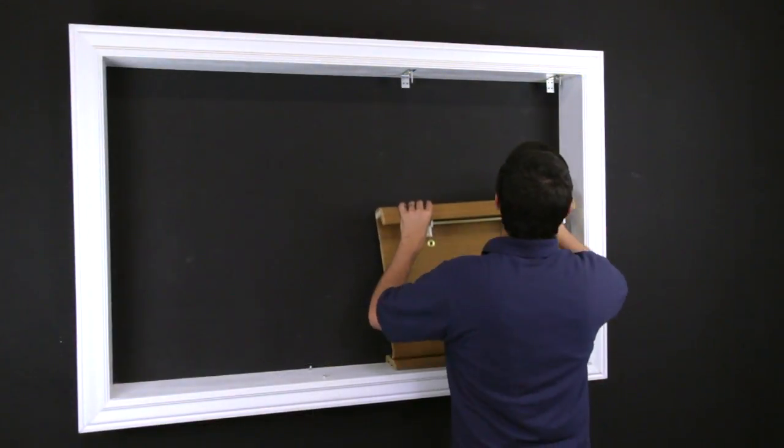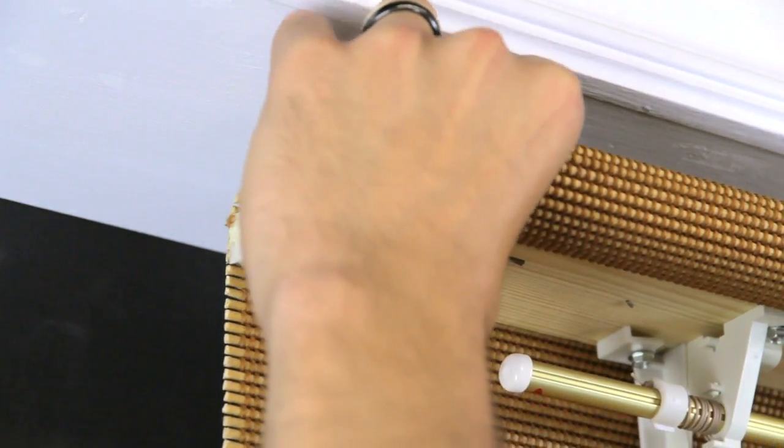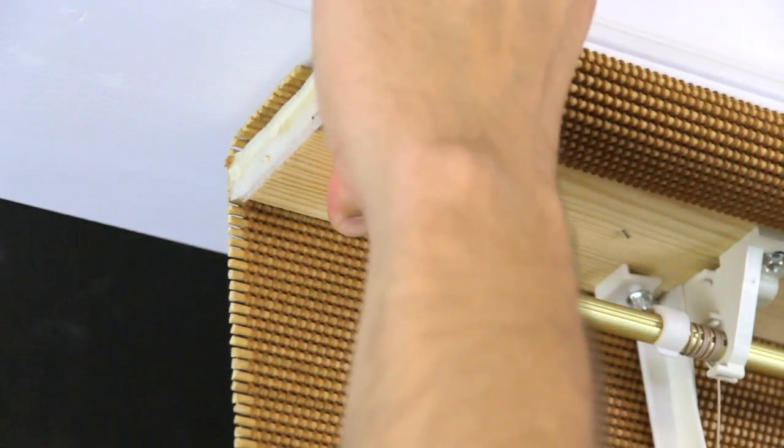To rehang, put the shade in place and fasten the wingnuts. If it's too big to hold, have another person help hold the shade in place and fasten the wingnuts at the same time.